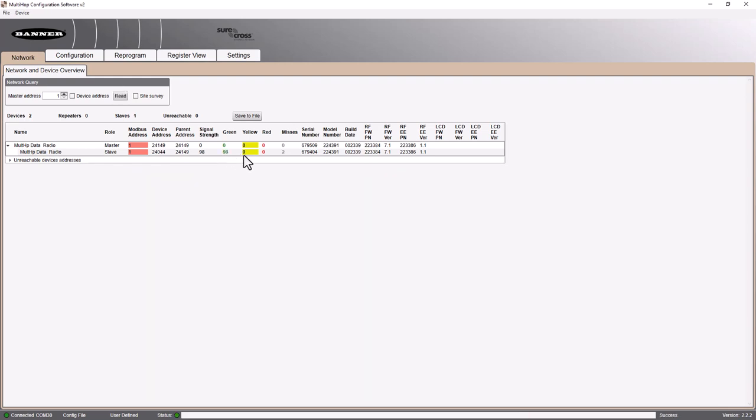And it breaks it out into a green, yellow, red, and missed category. You can see here that we had a very successful site survey, 98 green, two misses. The green is an indication of very, very good quality, almost as if we were having a conversation. Two people, very close, talking very loudly to one another. They can hear each other extremely clearly.